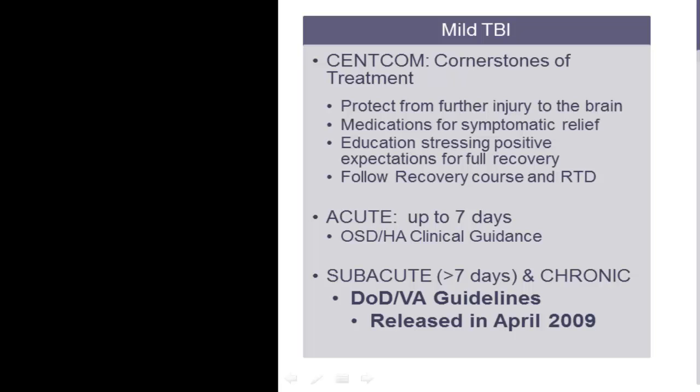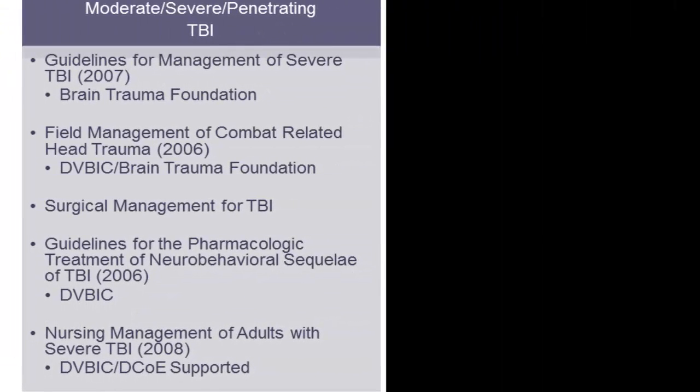There are also guidelines used to treat moderate, severe, and penetrating traumatic brain injury. These include the guidelines for management of severe TBI established by the Brain Trauma Foundation, field management of combat-related head trauma, surgical management for TBI, guidelines for the pharmacologic treatment of neurobehavioral sequelae, and nursing management of adults with severe TBI — all based on research showing the best possible treatment for the best possible outcome.